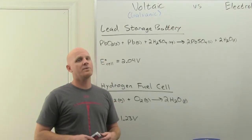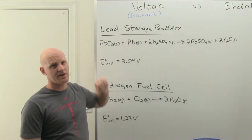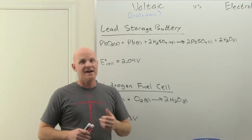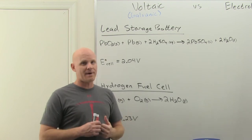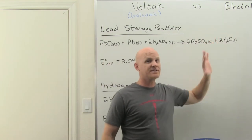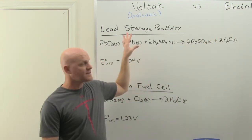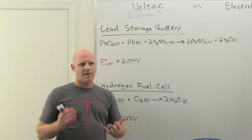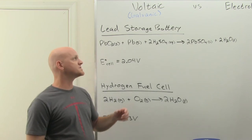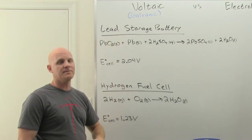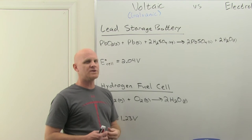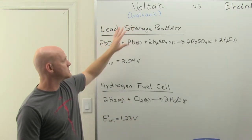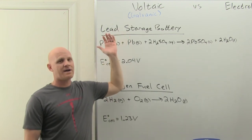Voltaic cells are typically what we refer to as batteries. Technically, when you are recharging a battery it acts as an electrolytic cell, but when it's actually supplying electricity it acts as a voltaic cell. We're going to discuss two common examples: the lead storage battery and the hydrogen fuel cell.